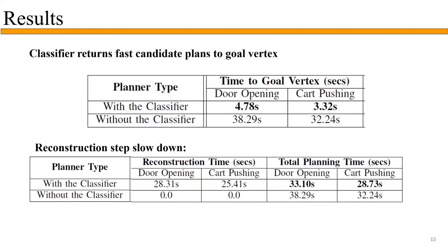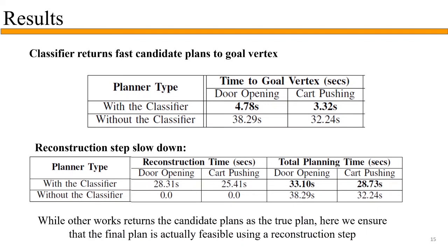Some criticism is that the benefit of the neural network is lost because of the reconstruction step. This is true, but other works using a classifier for planning tend to return the candidate plan as the final plan. Since we want to ensure feasibility, we also perform this reconstruction step and find new candidate plans as needed. If we can fully trust the classifier, we can skip reconstruction. Additionally, our approach finds kinodynamic local manipulation plans in less than a minute, which is much faster than other search-based or optimization approaches.